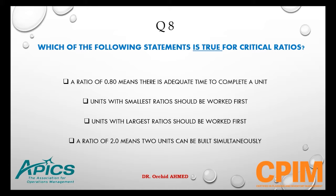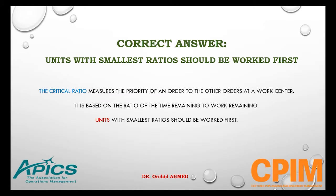Question number 8. Regarding critical ratio: a ratio of 0.80 means there is adequate time to complete a unit. The right answer is that units with the smallest ratio should be worked on first. The critical ratio measures the priority of an order relative to other orders at a work center, based on the ratio of time remaining to work remaining.